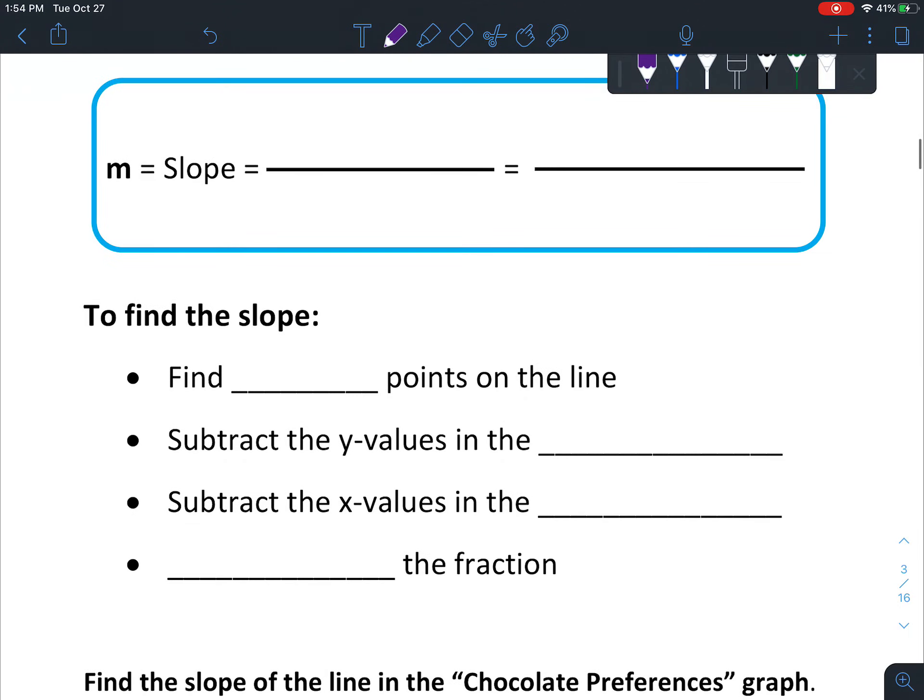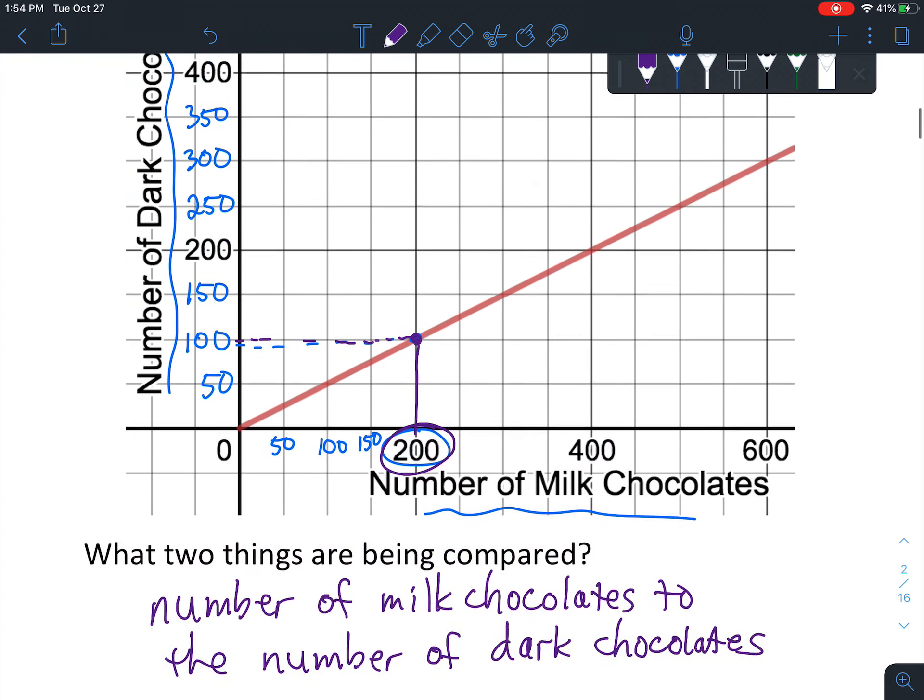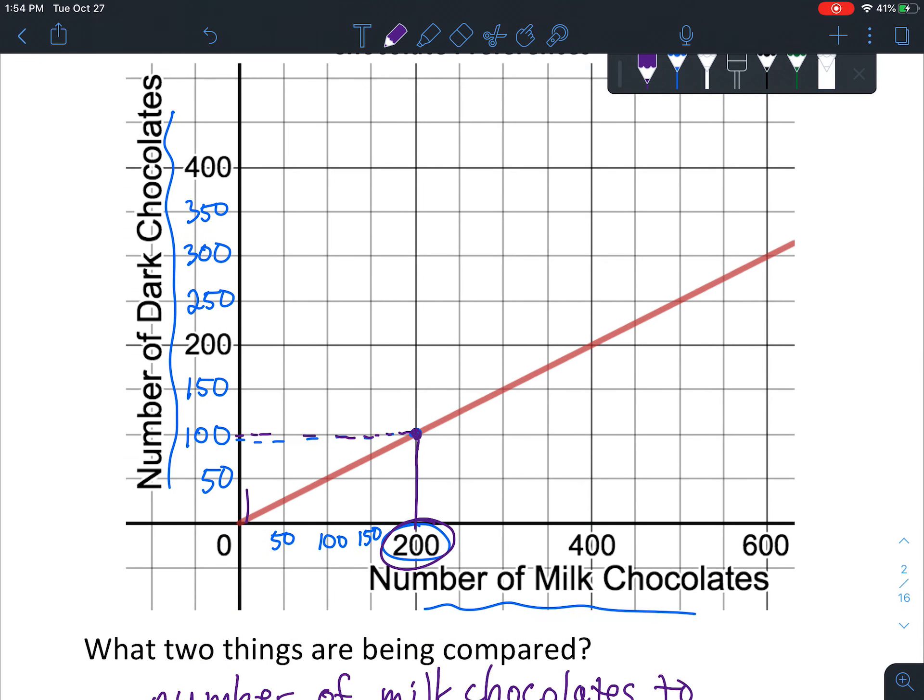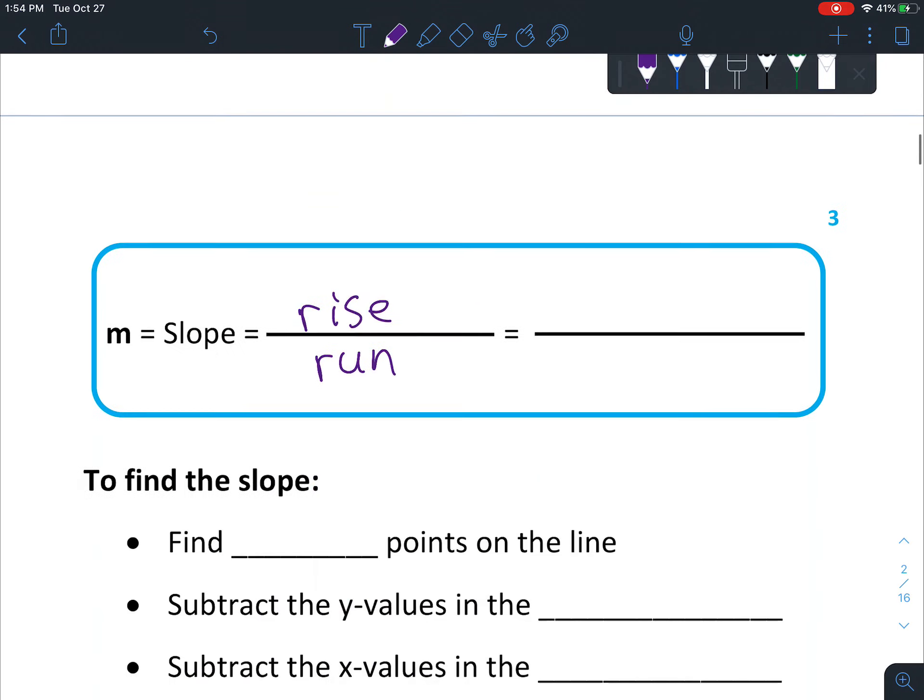Now let's talk about the slope. So the slope is that comparison. So a lot of times people say rise over run to describe it, because it's saying, how much do I go up compared to how much do I go over? And it's rise over run.